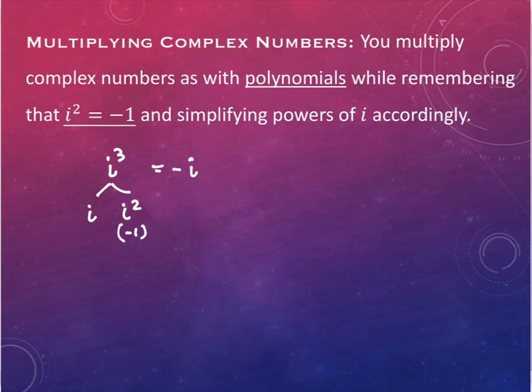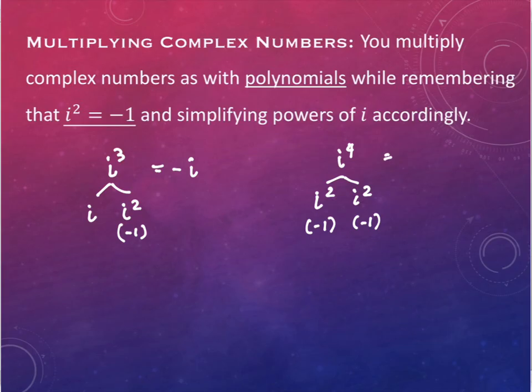If it were to show up with an i to the fourth, you can break it down into i squared and i squared. Each of those are negative one. And what happens when you multiply negative one and negative one? You get one. So you can break them down into smaller pieces that utilize i squared being equal to negative one.